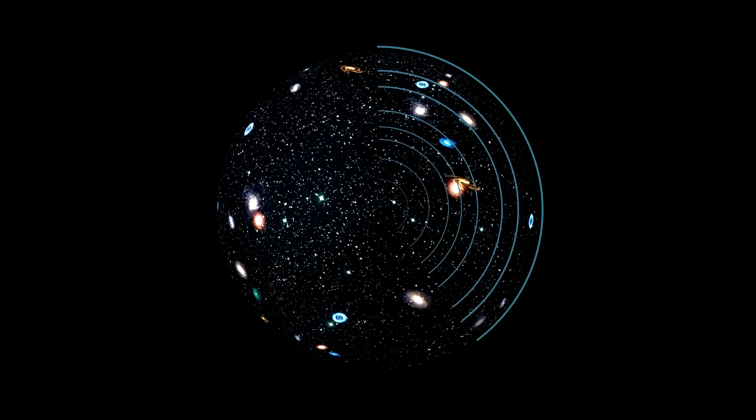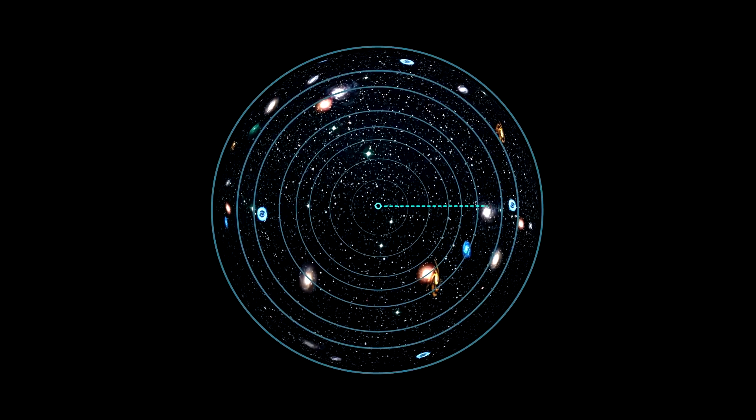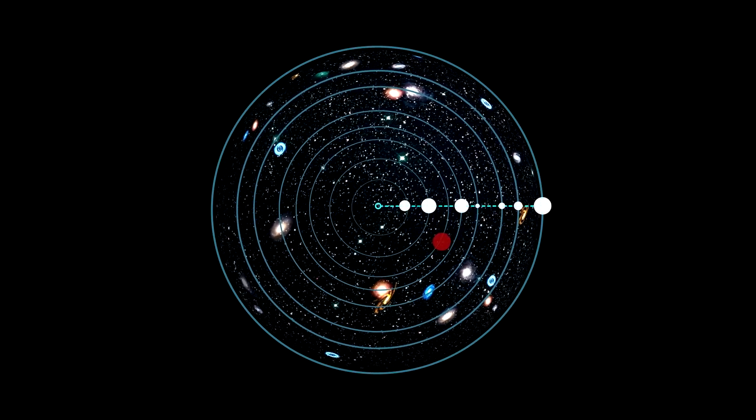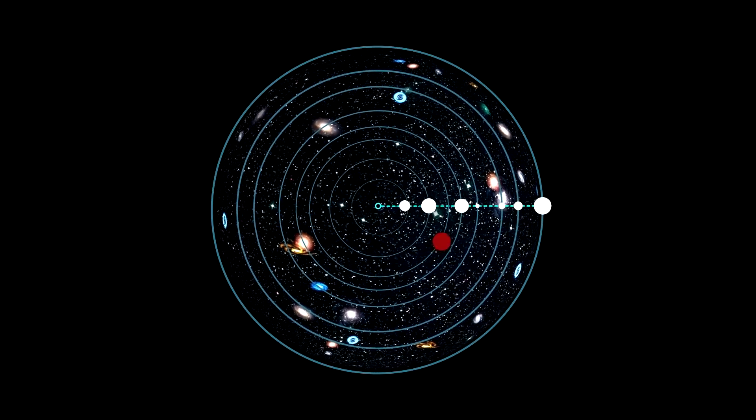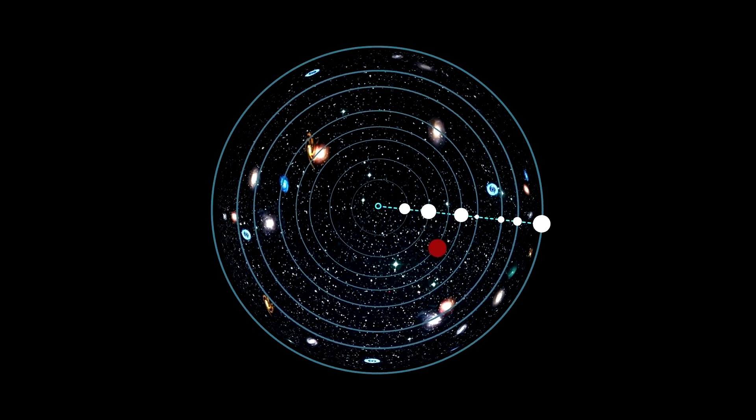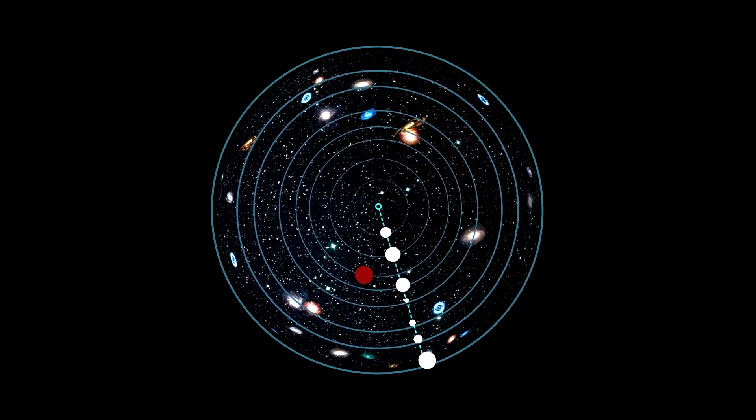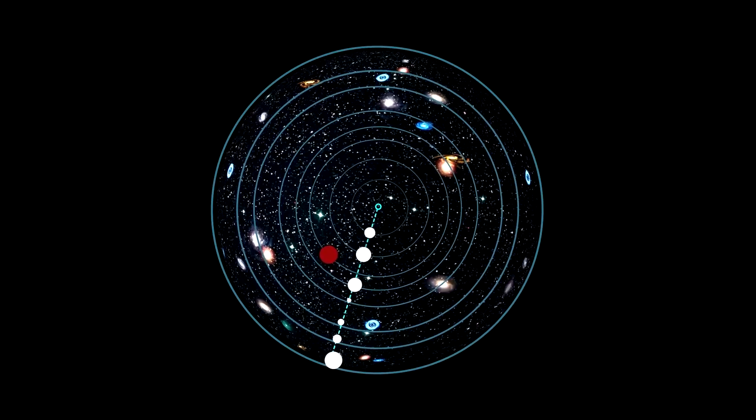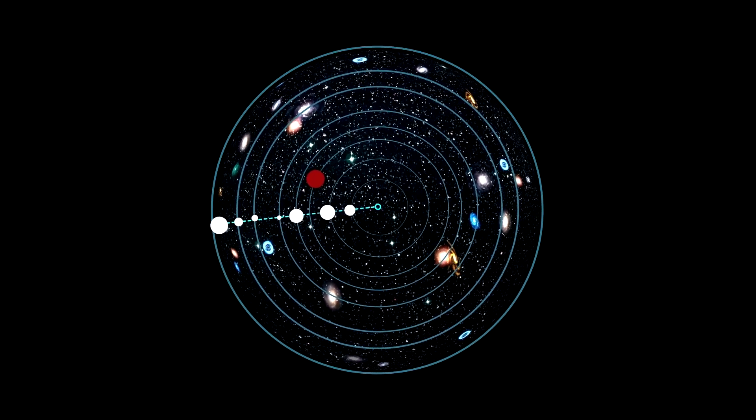The cosmological principle posits the following: viewed on a sufficiently large scale, the properties of the universe are the same for all observers. And according to the Copernican principle, the universe is globally homogeneous and isotropic. In such a system, the sizes do not change suddenly, and from one corner to the other, some harmony could be observed.